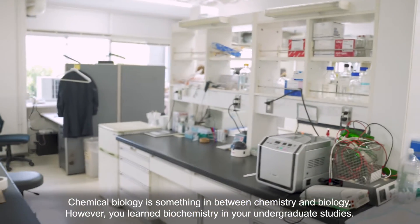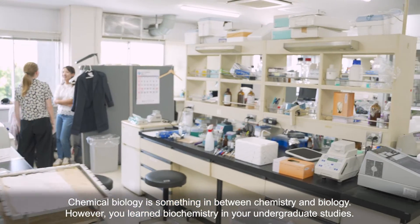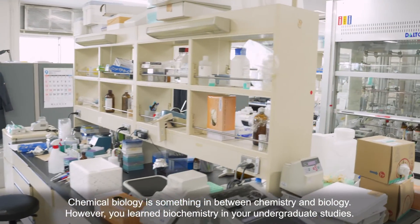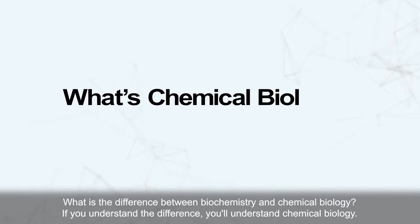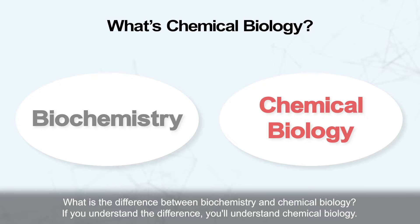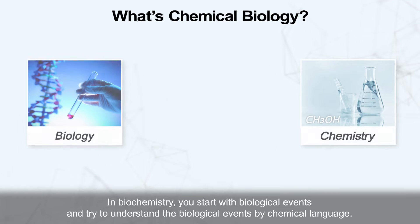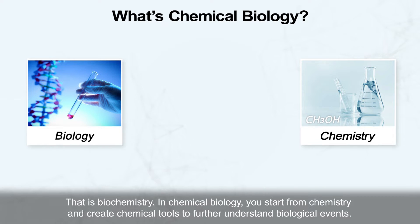Chemical biology is something in between chemistry and biology. However, you learned biochemistry in your undergraduate studies. What is the difference between biochemistry and chemical biology? If you understand the difference, you will understand chemical biology. In biochemistry, you start with biological events and try to understand them using chemical language. That is biochemistry.